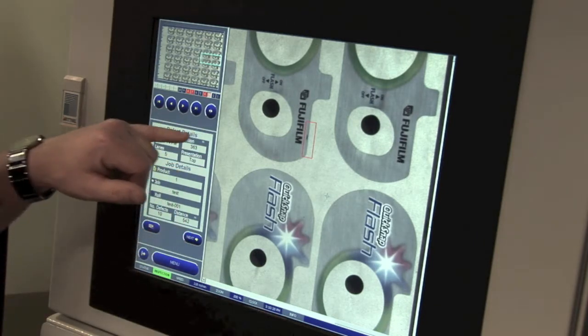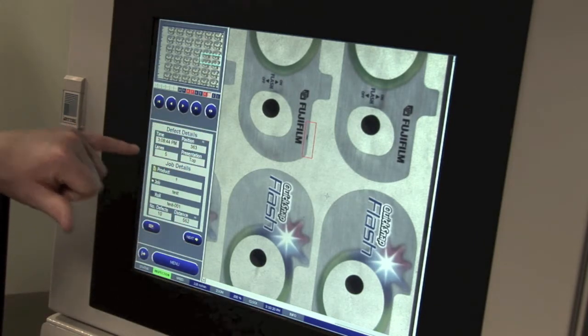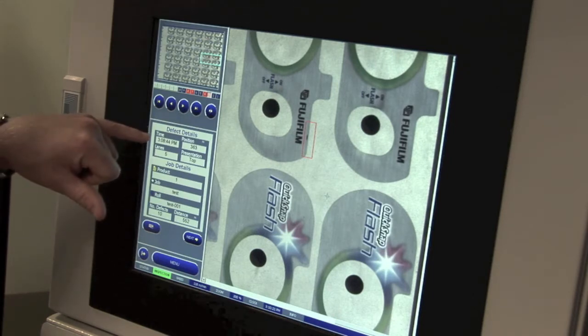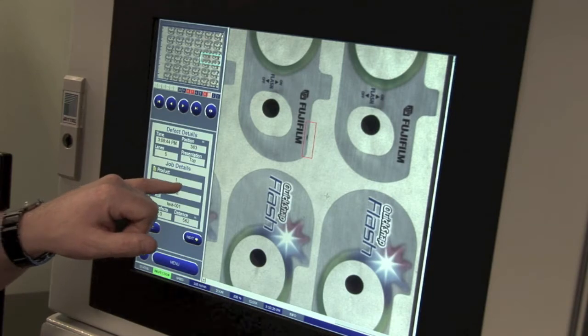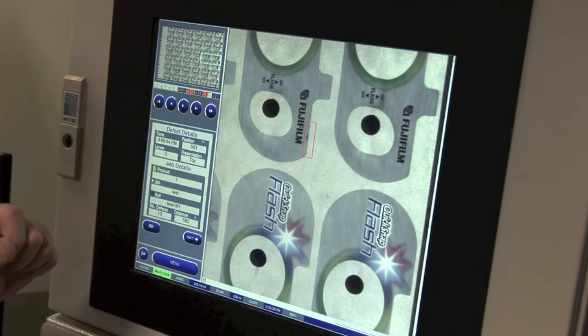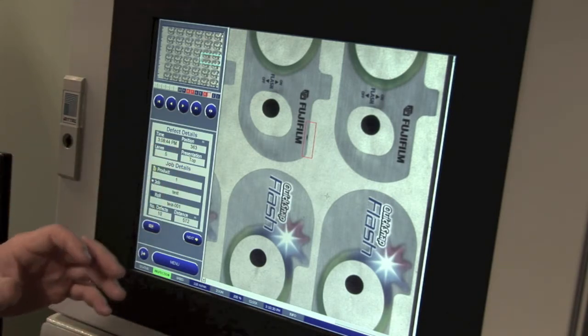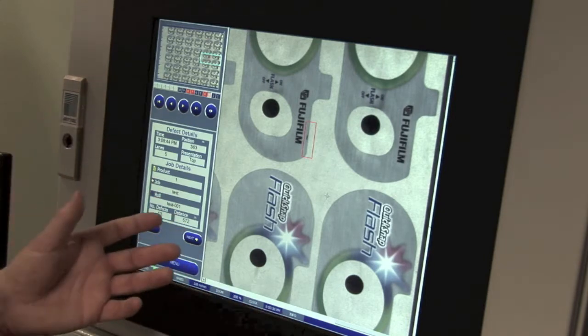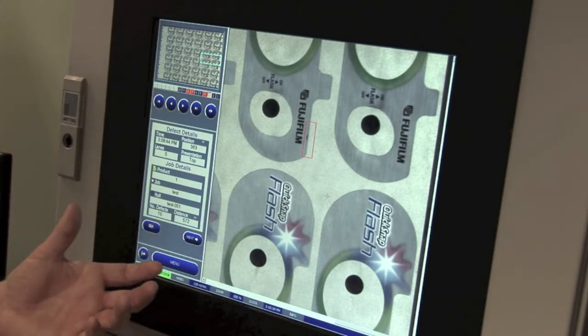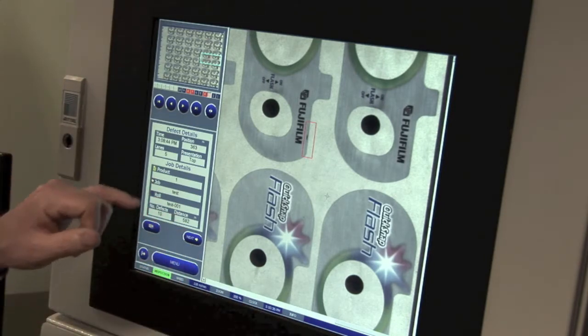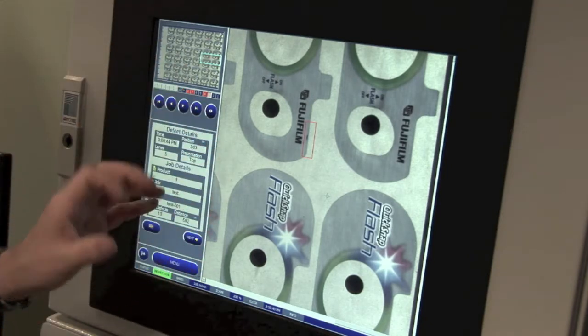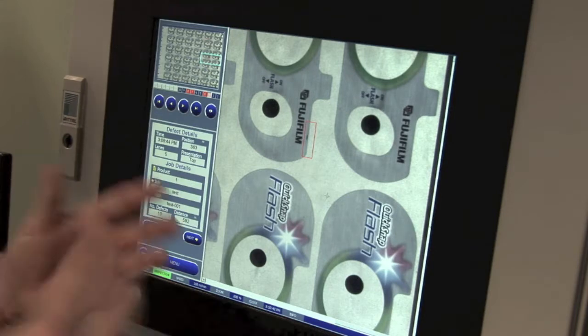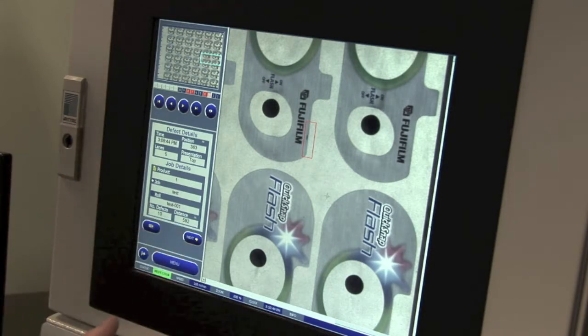In this section here, we've got defect details, which tells us what lane the defect occurred in, what time it occurred, what position within the printed roll, and what presentation. Presentation is important where we've got an inspection system that is inspecting front to back. So for commercial applications or newspaper applications, we're printing on both sides. We've got cameras looking front and back, and we need to know what relative side of the web in that scenario is causing the problem.